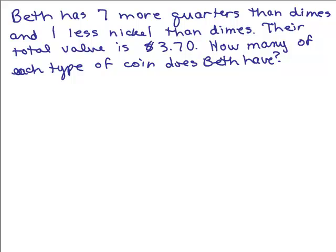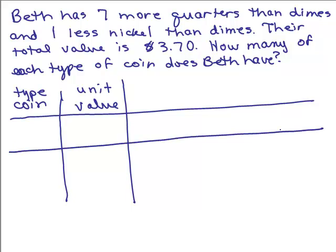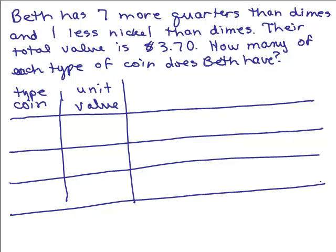All right, this time we're talking about 3 different types of coins, so we'll put this information in a chart, but we're going to have to have a column for 3 different kinds of coins instead of just 1. So this is the type of coin, and we'll always do a column for their unit value, in other words, how much it is for 1 coin. All right, so we have 3 types, so we're going to have to have 3 rows.